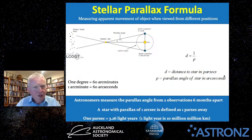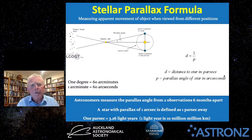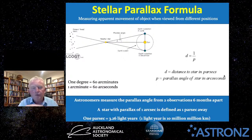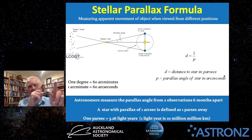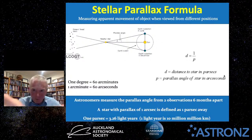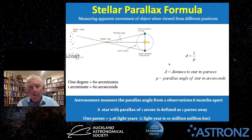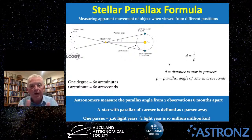Parallax essentially involves measuring the apparent movement of an object when you view it from different positions, relative to things in the distance. A good demonstration is using your finger: hold it up to your nose, close one eye, see where it aligns with a distant point in the room, then swap eyes and notice how it appears to move. Move your finger further out and repeat — you'll notice the apparent movement is smaller the further away the finger is. The same principle applies in astronomy: the further away a star is, the smaller the parallax angle to measure.